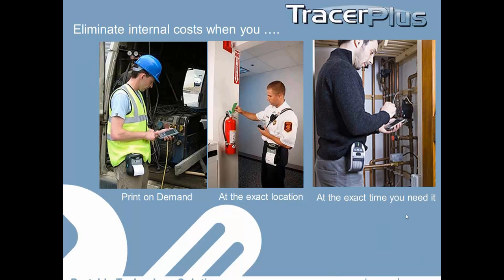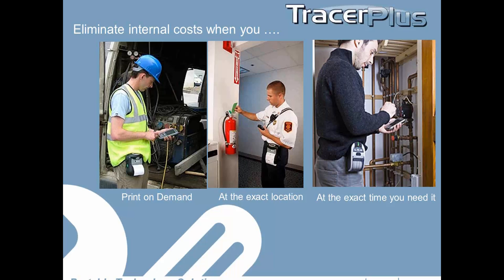Just as Tracer Plus replaces paper-based forms, some of the most effective mobile printing solutions do the same thing. Replacing handwritten documents such as receipts, labels, or work orders provides all Tracer Plus applications the ability to improve your productivity. This will also eliminate errors by being able to print on demand at the exact location and at the exact time that you need them.